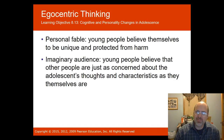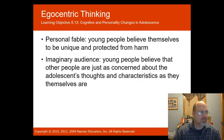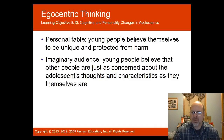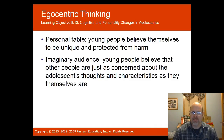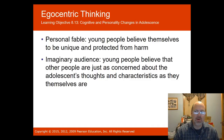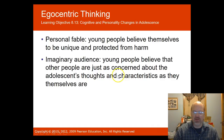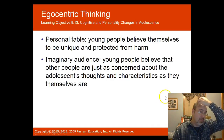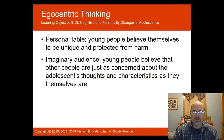David Elkind's book Egocentrism in Adolescence (1967) introduced two key terms. Personal fable is where young people believe themselves to be unique and protected from harm — believing that nothing happens to anyone else the way it does to them, and that nobody understands them. The imaginary audience is where young people believe others are just as concerned about their thoughts and characteristics as they are — as if multitudes of people are enthusiastically watching them. This imaginary audience concept applies well to social media and Facebook behavior today.